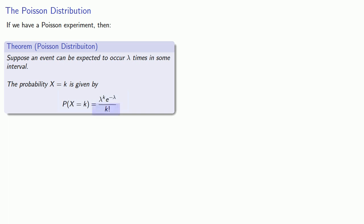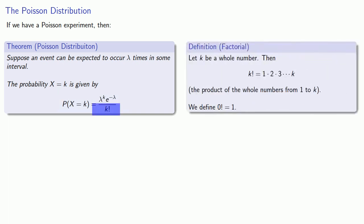Where k factorial is defined as follows: let k be a whole number. Then k factorial is the product of the whole numbers from 1 through k, where we also define 0 factorial as 1.